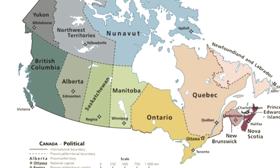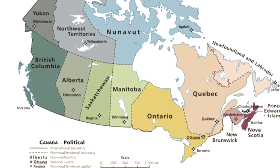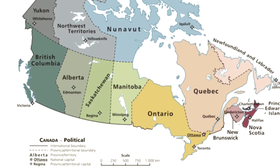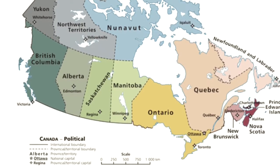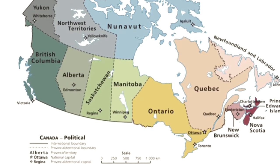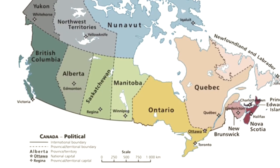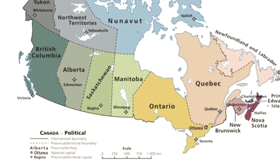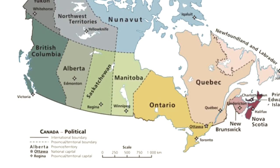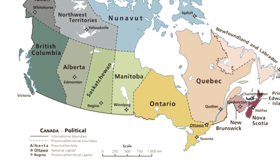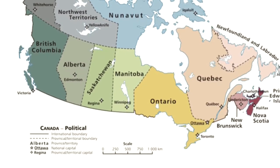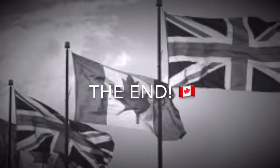With a growing population and extended territory, Canada officially consists of Quebec, Ontario, Newfoundland, New Brunswick, Nova Scotia, British Columbia, Prince Edward Island, and other northern provinces. The End!